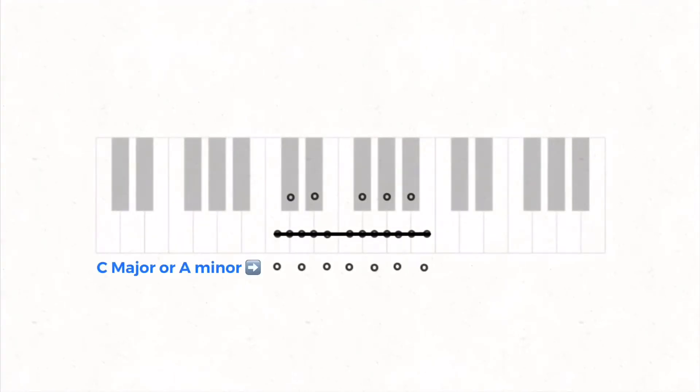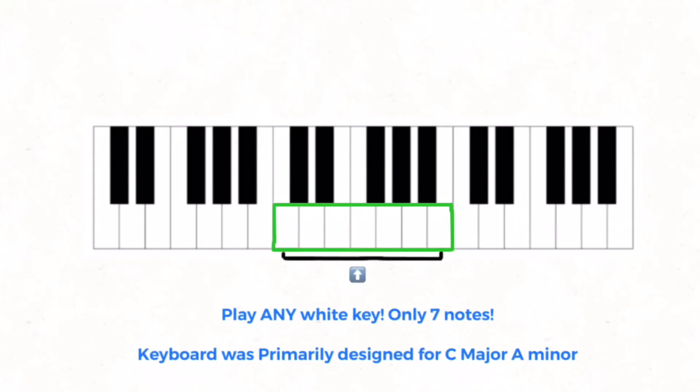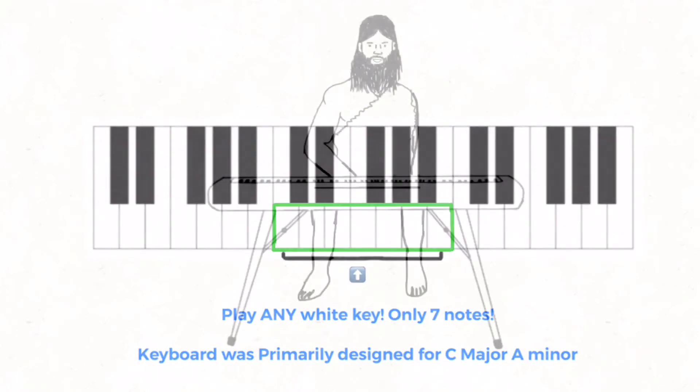One is a C major, A minor, and the other one is an F sharp major, D sharp minor. When he separated them, he did it on the keyboard. He was probably thinking to himself, I did it. Even a caveman can play this now, using only seven notes, which is always in harmony.